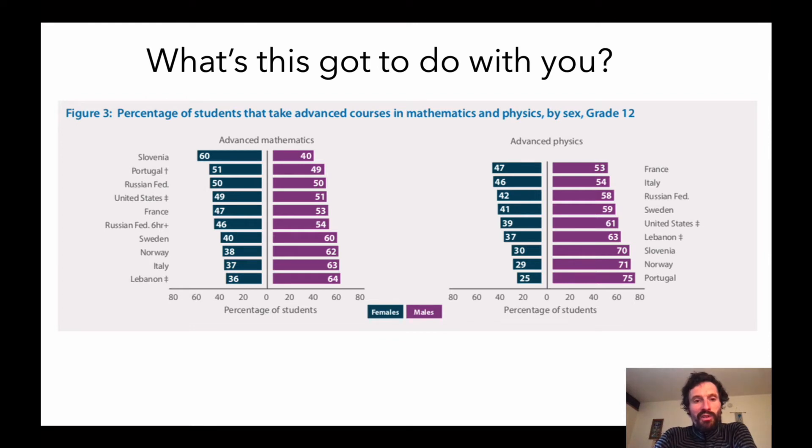Well if we look at a percentage of students who take advanced courses in physics and maths in grade 12, we can see in some countries, like Slovenia and France and Italy and Portugal, there's a pretty even representation of gender in these courses. In Slovenia, in fact, there's even a higher fraction of females who study advanced maths at year 12 level.